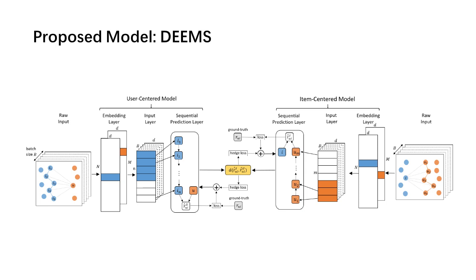One is the user-centered model, taking the view of sequential recommendation. And another is the item-centered model, taking the view of information dissemination.